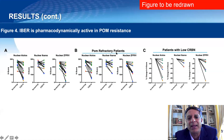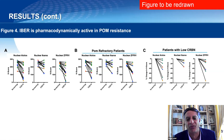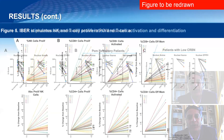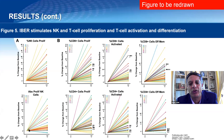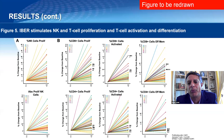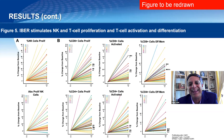This drug can overcome low cereblon expression and work even in patients refractory to pomalidomide — seeing that in actual patient cells, not just cell lines, is really exciting. On the flip side, looking at NK cell and T cell proliferation, most graphs are going up, showing significant induction of immune activation: CD4 cells, CD8 cells, and NK cells all increasing. This suggests iberdomide is not just a direct anti-myeloma agent but also a very potent immune activator and a great partner for immune-based therapies.